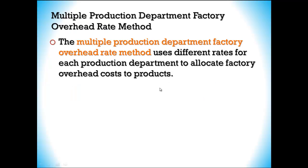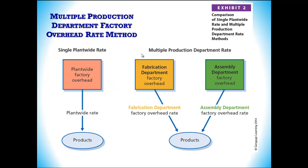Getting a little more precise, we might have a factory overhead rate for each department. The multiple production department factory overhead rate method uses different rates for each production department to allocate factory overhead costs to products. So instead of just one rate, we now have one for the fabrication department and one for the assembly department, and both are involved in determining how we divide up that factory overhead.